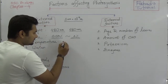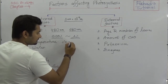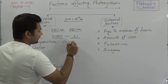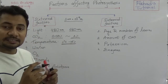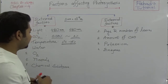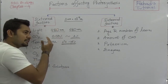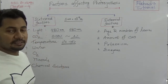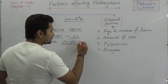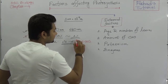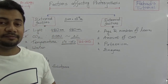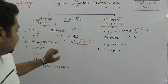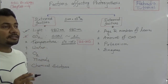Temperature is another external factor. Less than 1 degree Celsius or more than 45 degree Celsius — in both cases the rate of photosynthesis will decrease. Even at 0 degrees Celsius, the rate of photosynthesis will definitely decrease. The optimum temperature for photosynthesis is approximately 22 to 35 degrees Celsius, and within this temperature range the capacity for photosynthesis is highest.